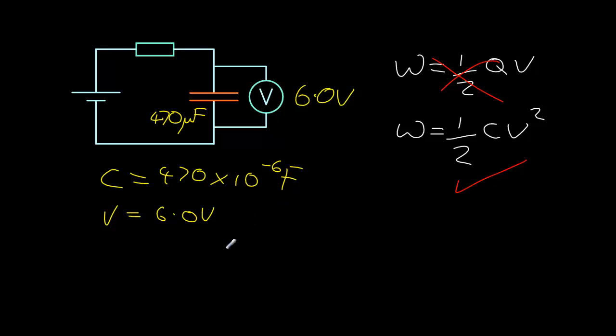So if we just put this in, the amount of work done is going to equal one-half times the capacitance, 470 times 10 to the minus 6, multiplied by 6 squared, which is 36, and that should give us a result of 8.5 times 10 to the minus 3 joules.